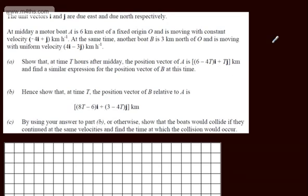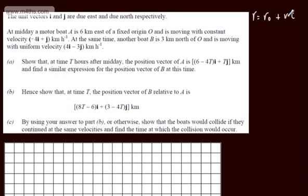We can say a position vector can be given in the form r equals r₀ plus vt. So where we end up is equal to where we started plus velocity multiplied by time.